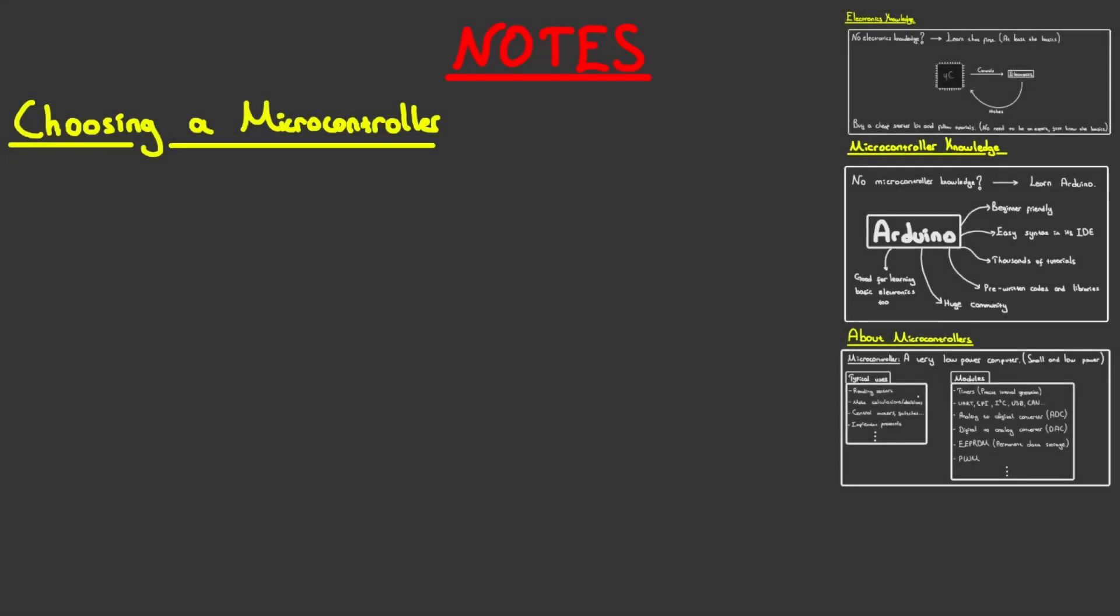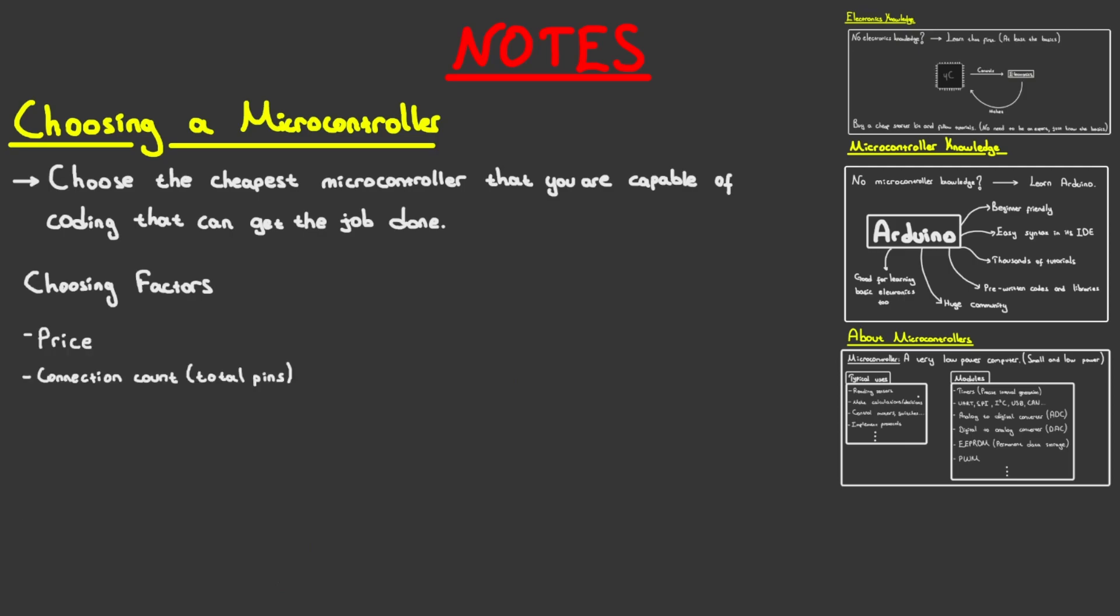Some people, especially those who are migrating from Arduino to discrete microcontrollers, may have the question: how do you choose the microcontroller for your project? Well, it's very simple. Choose the cheapest microcontroller that you are capable of coding that can get the job done. That pretty much explains it. Main choosing factors are going to be price, connection count, peripheral set, and speed.